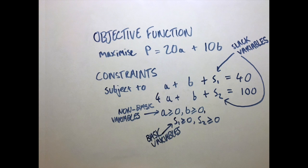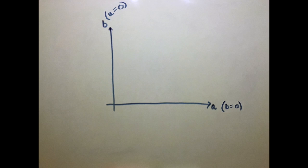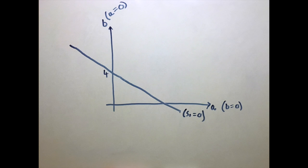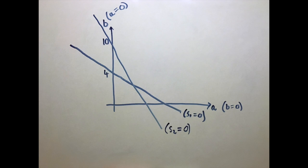We can now plot a graph of A against B, with A being the horizontal axis and B being the vertical axis. But the horizontal axis is actually the line B = 0 and the vertical axis is actually the line A = 0. Some rearranging of the first constraint will give us this line here, which occurs when S1 = 0, and similarly we can rearrange the second constraint to get this line here, which occurs when S2 = 0.